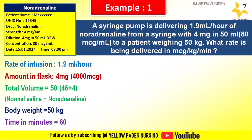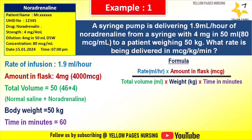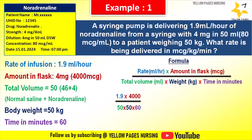Using the formula: rate (ml/hr) × amount in flask (mcg) ÷ total volume (ml) ÷ weight (kg) ÷ time (minutes), that is: 1.9 × 4000 ÷ 50 ÷ 50 ÷ 60, which gives the answer 0.05 mcg per kg per minute.